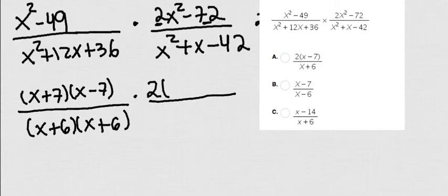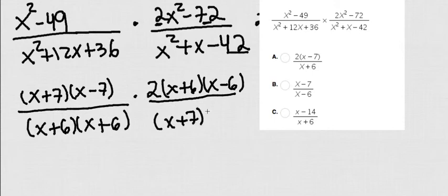At the same time, x squared minus 36 is x plus 6 times x minus 6. Then the bottom, I need two factors that when I multiply them give me 42, when I add them give me 1. That's going to be x plus 7 times x minus 6.